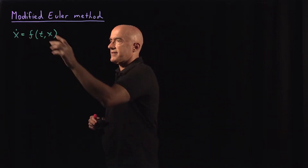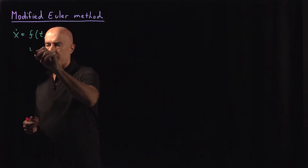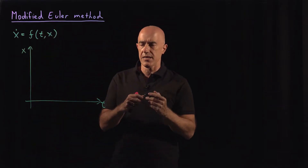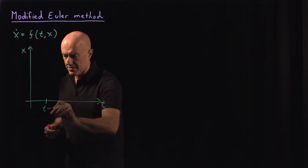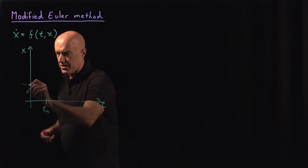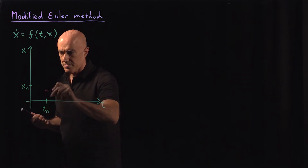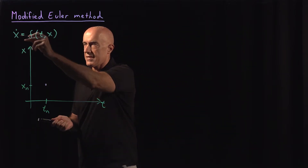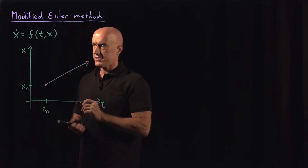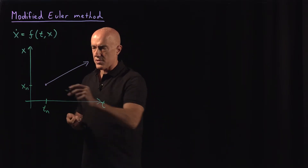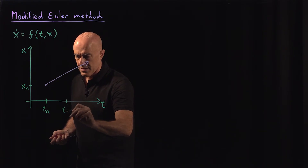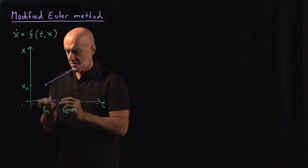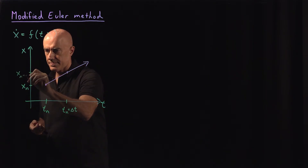So we're solving x-dot equals f of t, x. Let me draw the graph again. We have t and x. Let's say that we already made it to the nth step, so we have t sub n here, and the value of the function is x sub n. We know this point on the graph. Then we use the differential equation to integrate forward. x-dot gives us the slope, and we integrate forward along the tangent line to t_n plus delta-t, getting x_{n+1}.